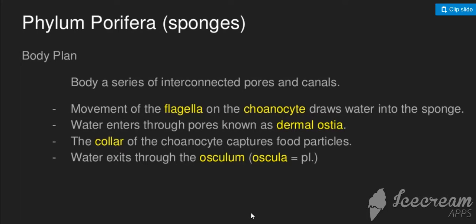The skeleton has general characteristics. The choanocyte cells drive water movement and flow. Water enters the sponge through the dermal ostia — the pores on the surface. The choanocytes, which have flagella, propel the water through the sponge body.